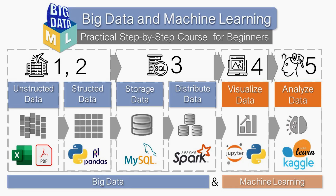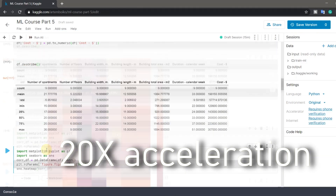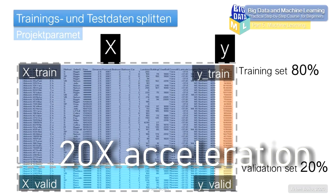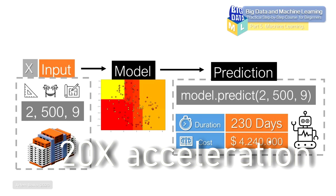Since the material on the practical application of Big Data and Machine Learning turned out to be voluminous, I divided the course into 5 parts. Each part consists of approximately 10 lessons and the duration of each part is approximately 1 hour. In each course, only 20% of the information is theoretical.